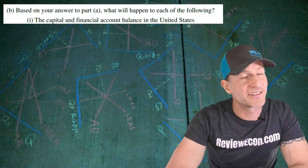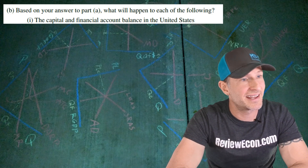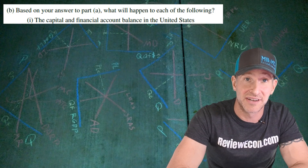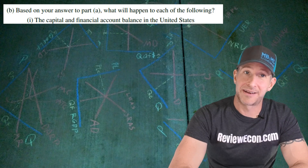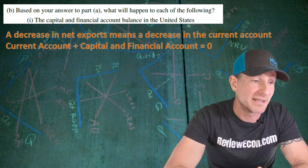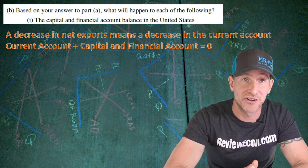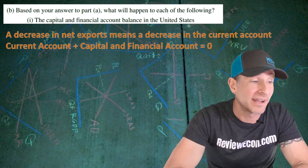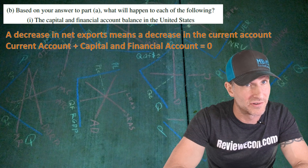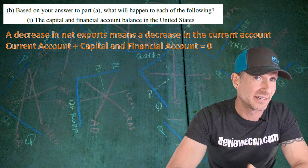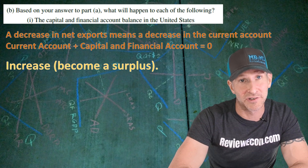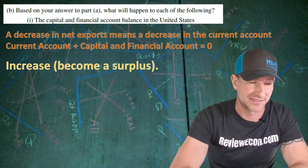For part B, based on the answer from part A, we have to say what will happen to the capital and financial account in the United States. A decrease in net exports means a decrease in the current account. And the current account and capital and financial account must always equal zero. That means when there's a decrease in one, there's an increase in the other. So the answer is increase, or becomes a surplus.